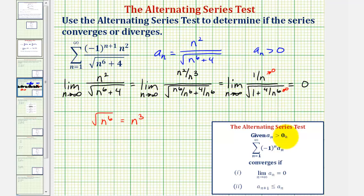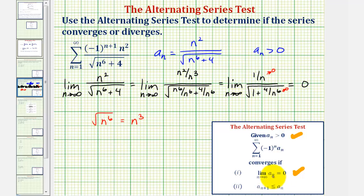So we've shown that a sub n is greater than zero, and we've shown the limit as n approaches infinity of a sub n equals zero. Now we're left to show that a sub n plus one is less than or equal to a sub n, at least after the first several terms.